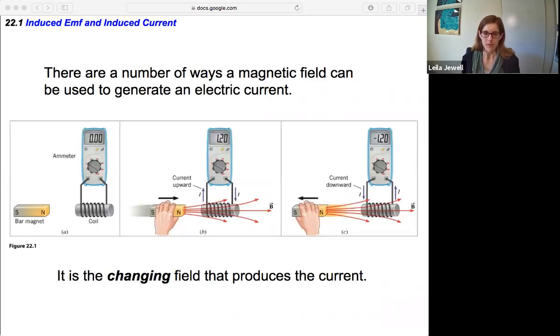The basic idea here is that there's a number of ways that a magnetic field can be used to generate an electric current. Here's one example: if we have an ammeter, something that can detect current, and it's connected to a coil—this wire wrapped around a ferromagnetic material that just enhances the effect—the main important thing to focus on is that we have an ammeter, coil, and then a bar magnet nearby.